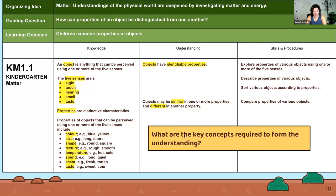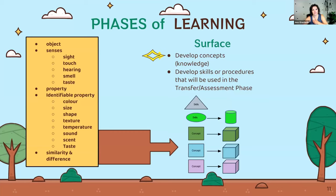We look at the knowledge column to figure out the key concepts required to build the understanding — highlighted in yellow. What do these concepts look like as a list? Objects, senses — the five senses — identifiable properties, and then similarities and differences. This is the surface phase of learning.